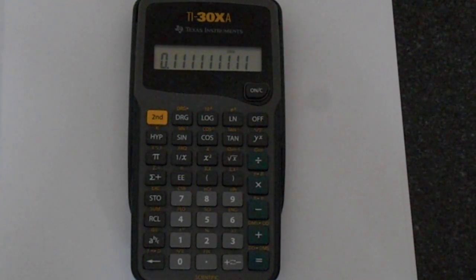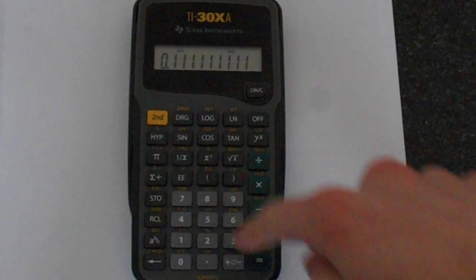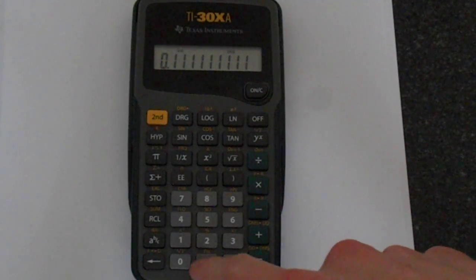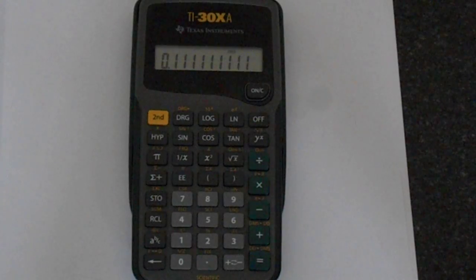We can change the number of decimal places that are shown very simply. If you press second function and then the dot to access fix, and then if you press any number here, you can specify the number of decimal places you want.